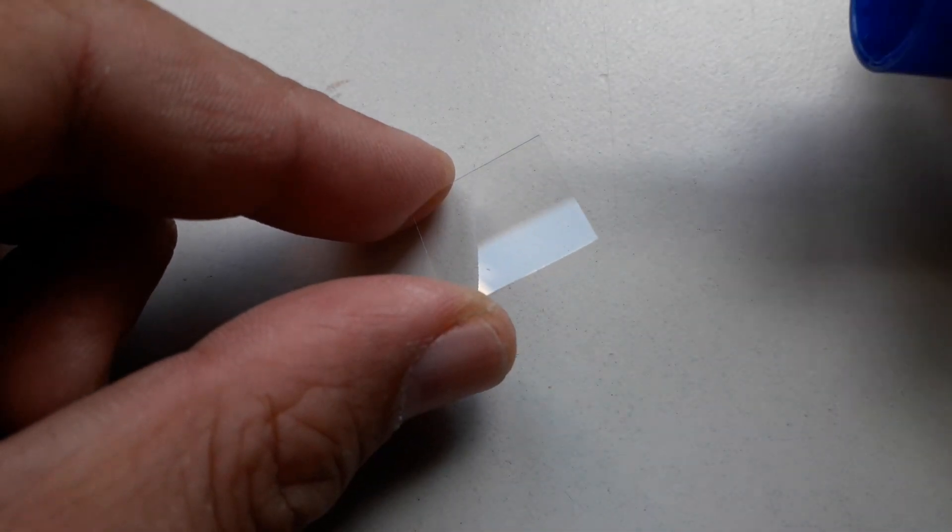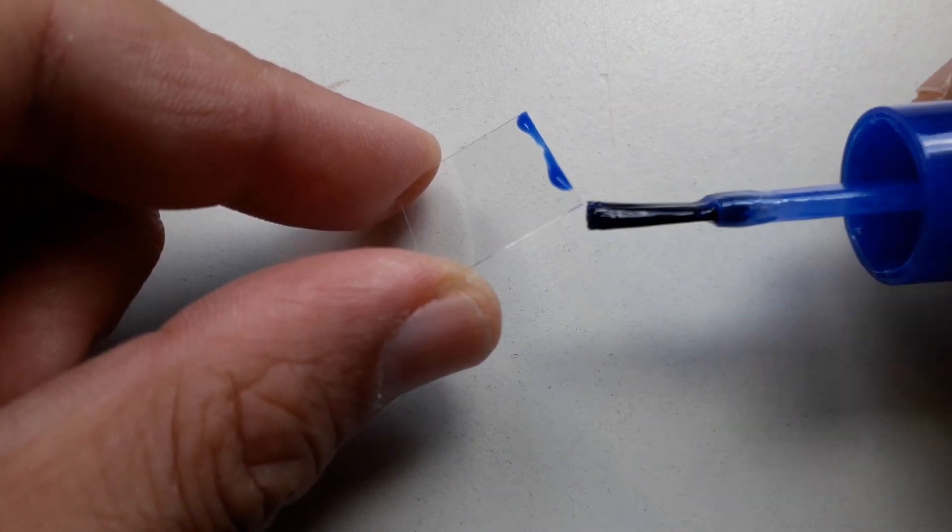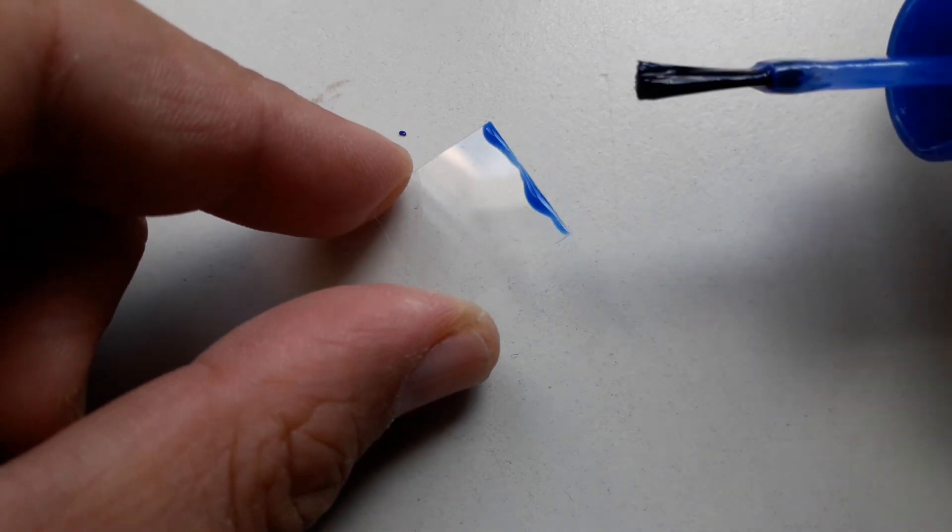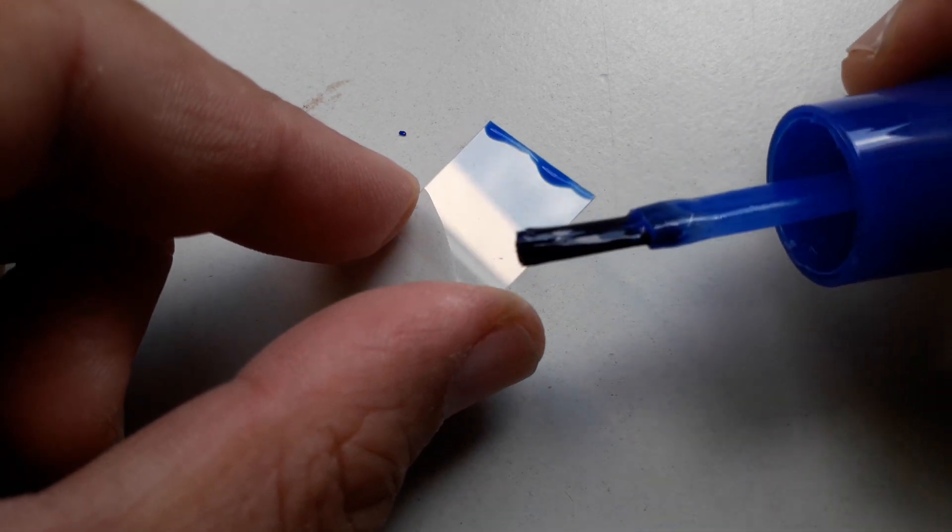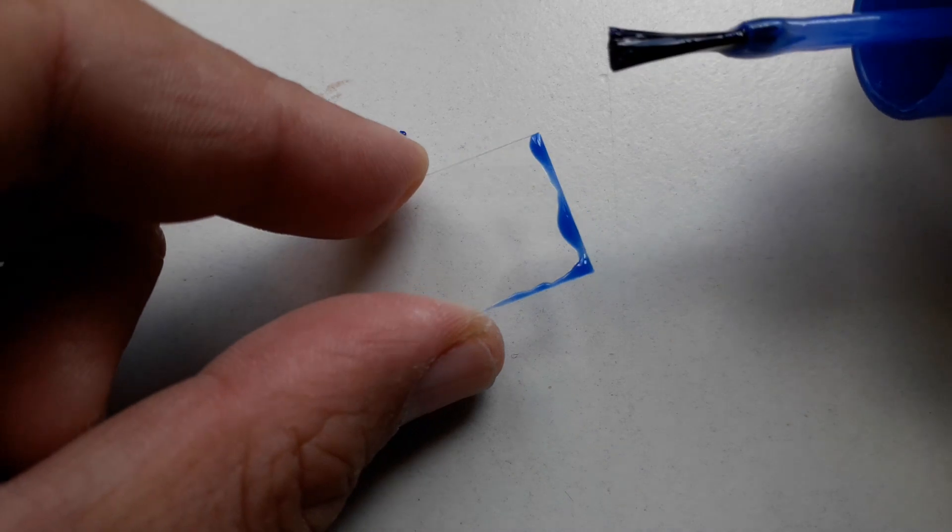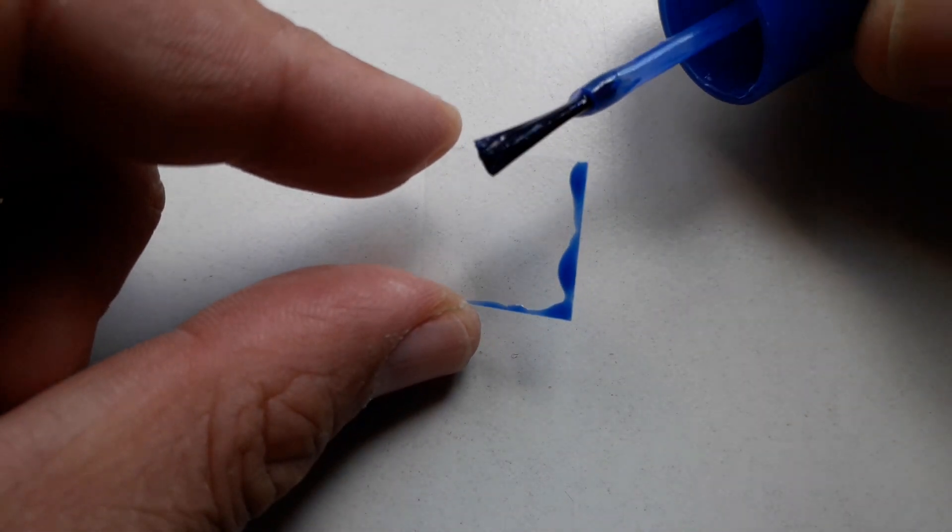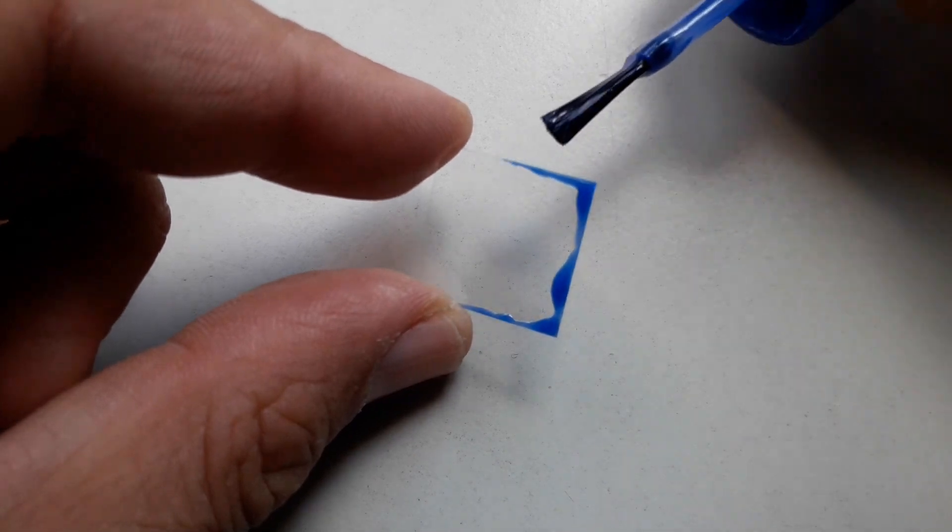What you do is you take a cover glass and you first cover the edges with nail polish very carefully just like this and you allow this to dry. This will now be both a spacer and it will also prevent the nail polish from reaching the specimen. This is probably the preferred method.